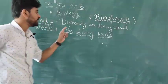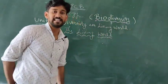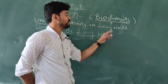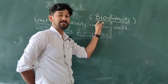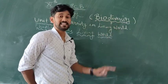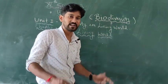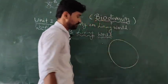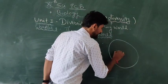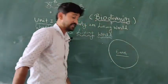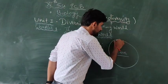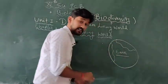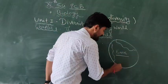First we will discuss the meaning of diversity in the living world. The living world is known as 'bio' and diversity basically means variation in living organisms. On the earth surface, in different continents, there is a presence and occurrence of different living organisms.